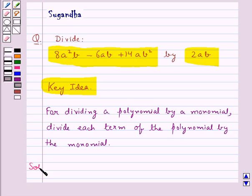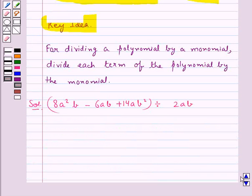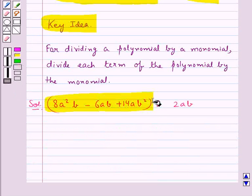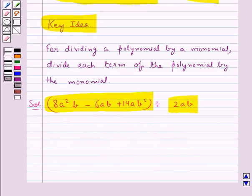Now let's move on to the solution. We need to divide 8a²b - 6ab + 14ab² by 2ab. So this is the polynomial and we need to divide this polynomial by the monomial 2ab. As I have given in the key idea, we need to divide each term of this polynomial by the given monomial.